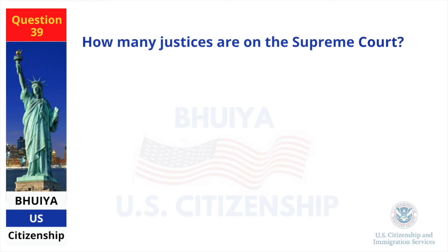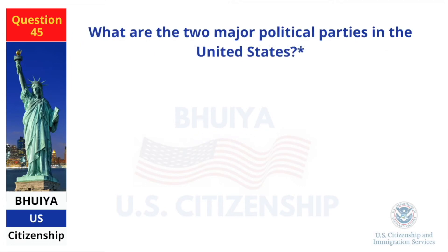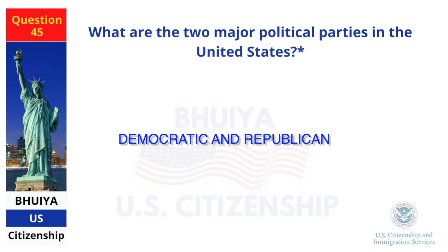How many justices are on the Supreme Court? What are the two major political parties in the United States? Democratic and Republican.